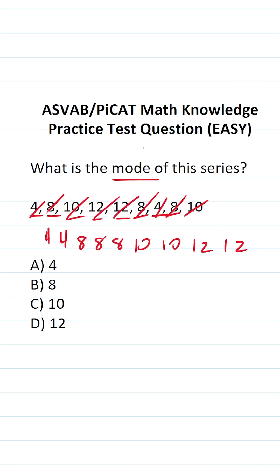Now that we've rearranged these numbers from least to greatest, we can easily see that the number that appears the most often is 8. 8 appears 3 times, whereas 4 appears twice, 10 appears twice, and 12 appears twice. So the mode of this series is B, 8.